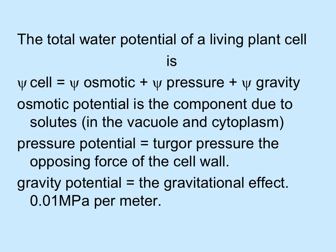The living plant cell has water potential made up of different components: osmotic water potential, pressure potential, and gravity potential. The osmotic potential takes into account the concentration of solutes in the vacuole and in the cytoplasm of the cell. The pressure potential is turgor pressure as determined by the opposing force of the strong cell wall. Gravity potential is simply the gravitational effect, which is about negative 0.01 megapascals per meter above the ground.